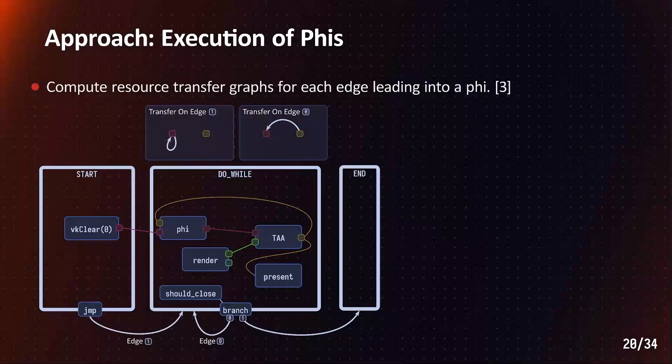Using this resource assignment, we compute a resource transfer graph for each edge leading into the phi. The input color is the source of an arrow, the output color is the target of an arrow. To avoid copies between resources, we want to execute these transfer graphs as a permutation of resources whenever possible. We therefore complete transfers to cycles.